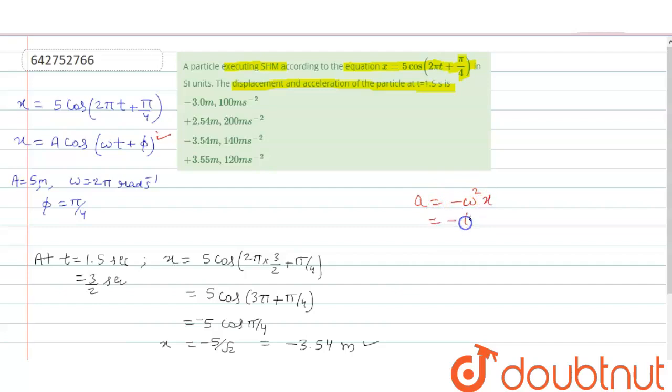Omega is 2 pi whole square. X is minus 3.54. So it becomes plus 4 pi square, that is 3.14 square multiply by 3.54.